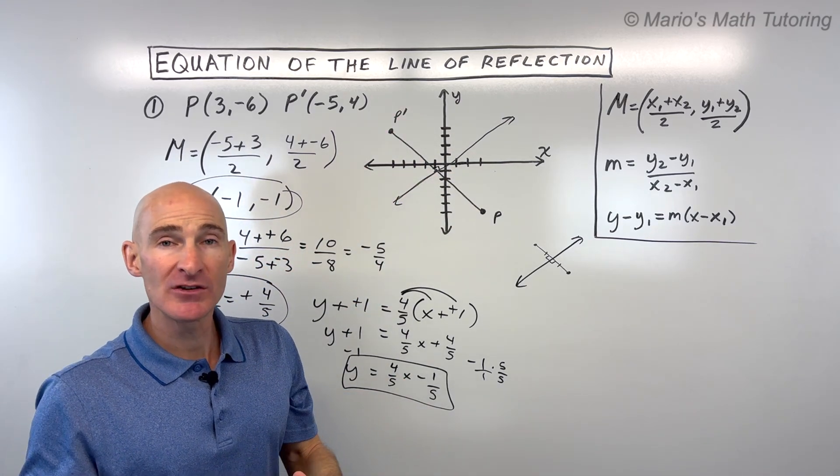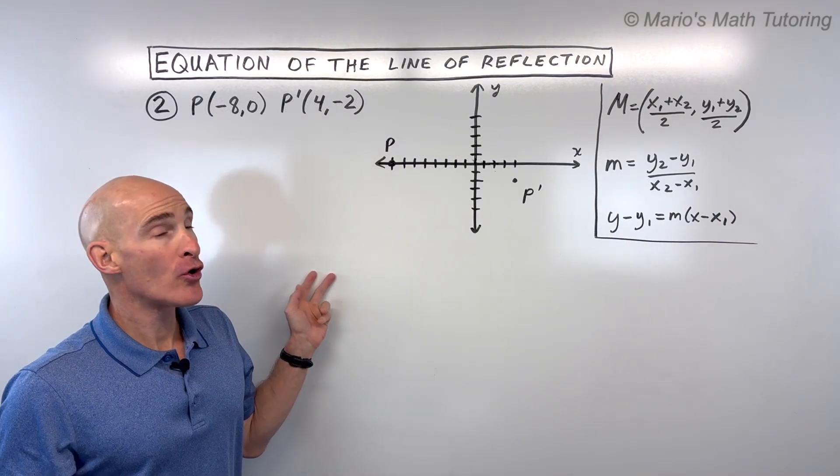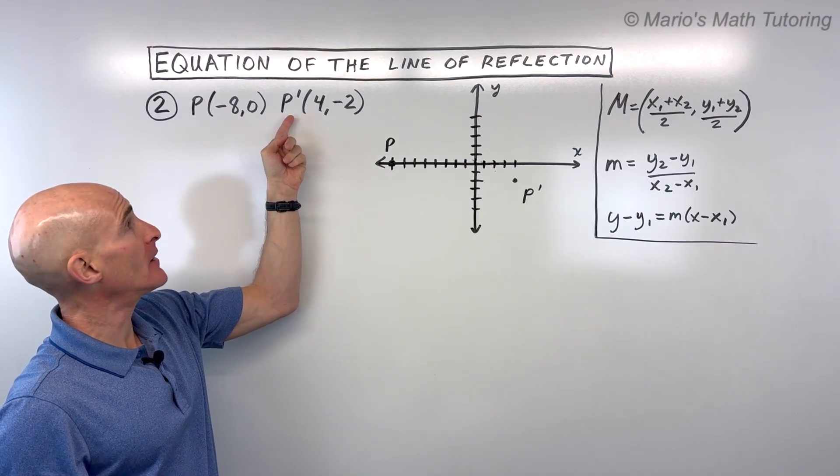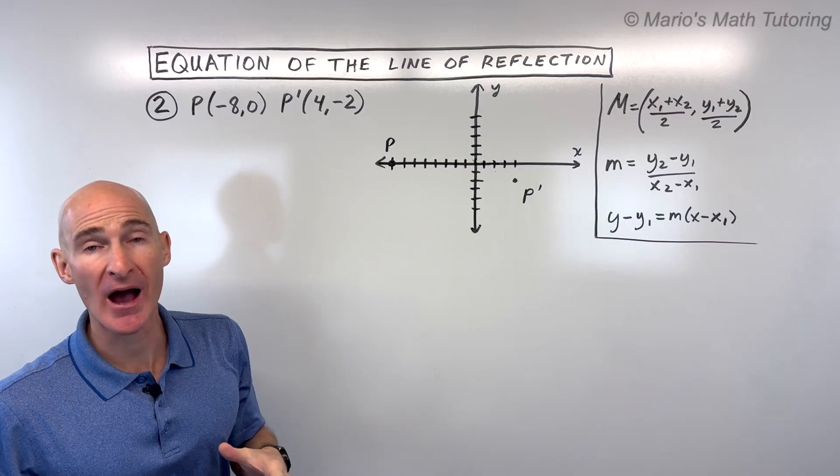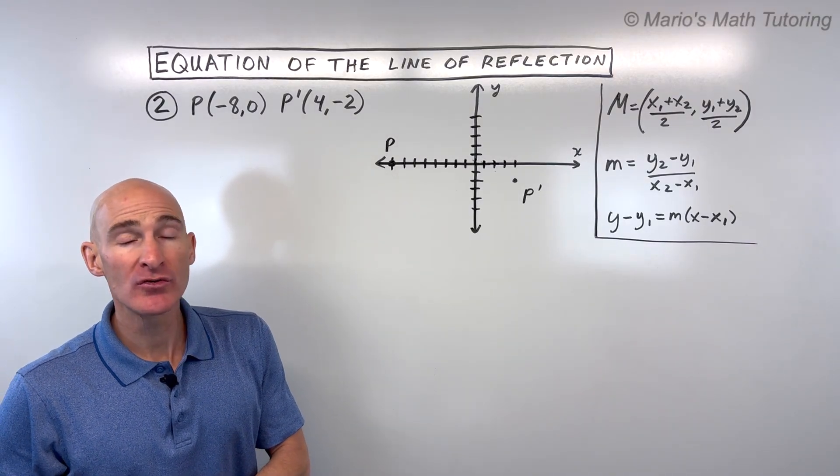Let's take a look at another example. See if you can do this second example on your own and we'll go through it together. Try number two on your own. We've got our pre-image P negative 8, 0 and our image, which is our new point, P prime 4, negative 2. So how do you find that line of reflection, the equation of the line of reflection?